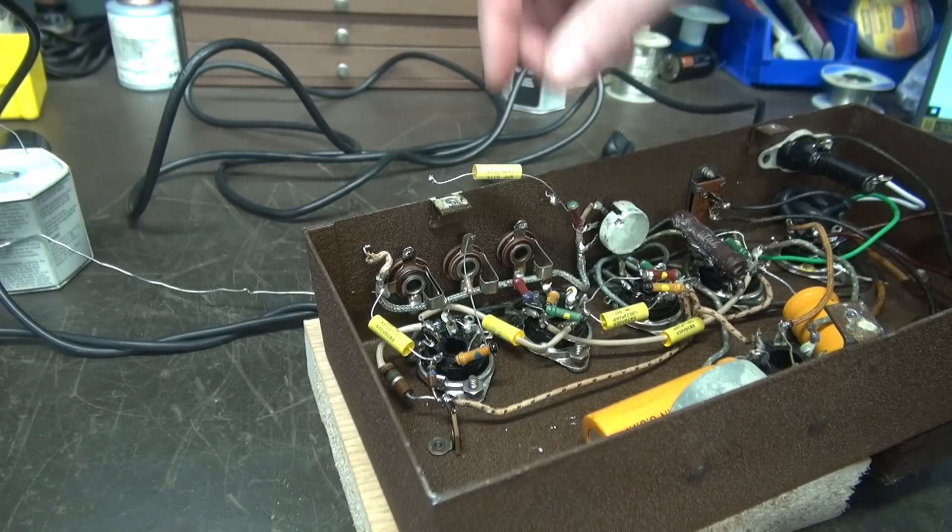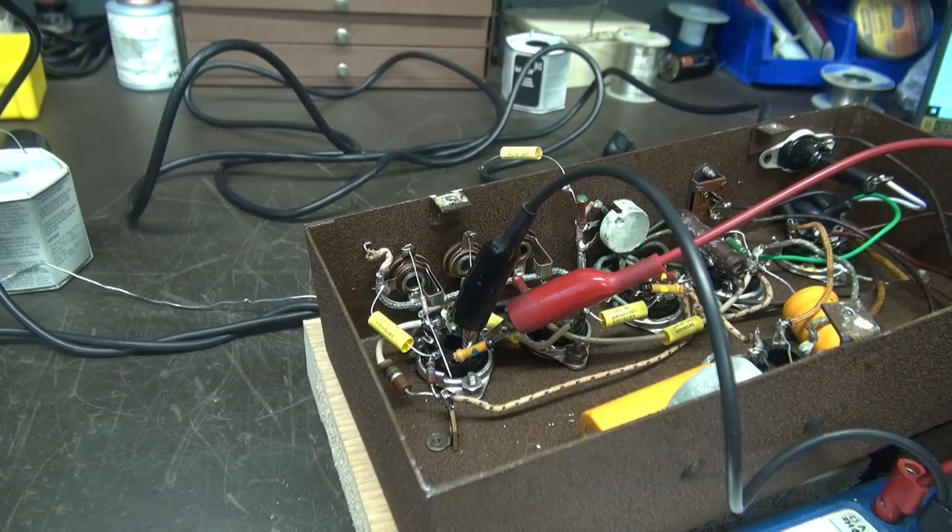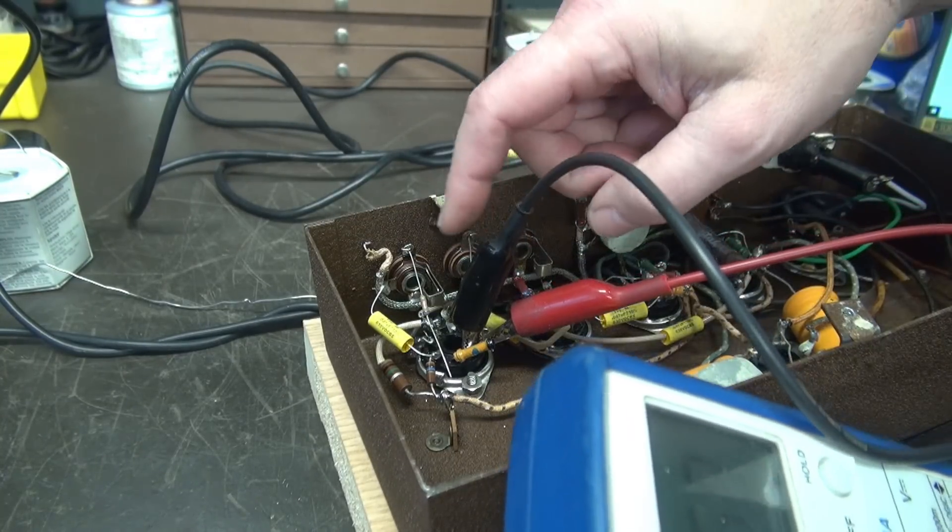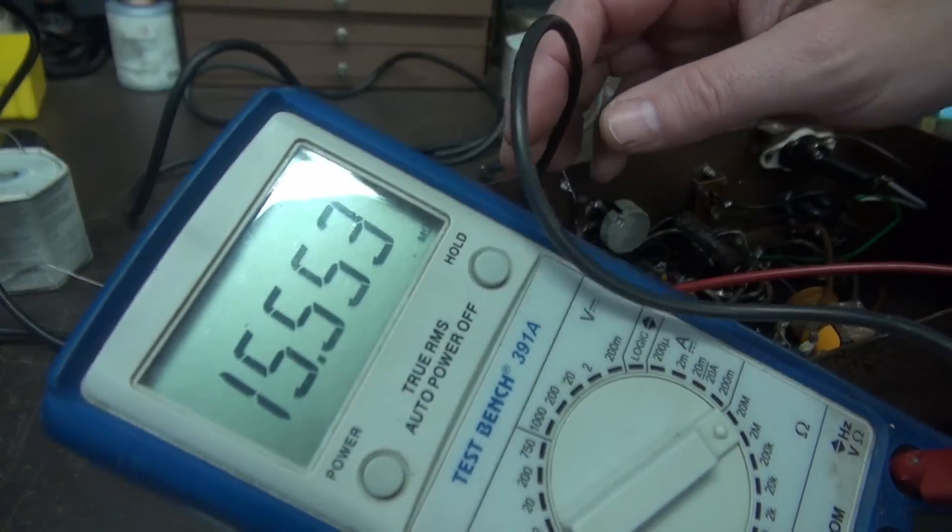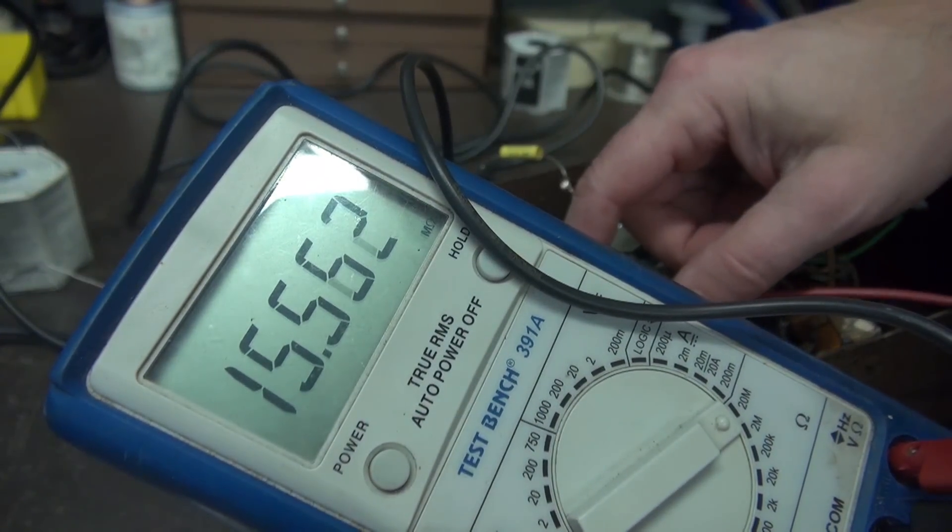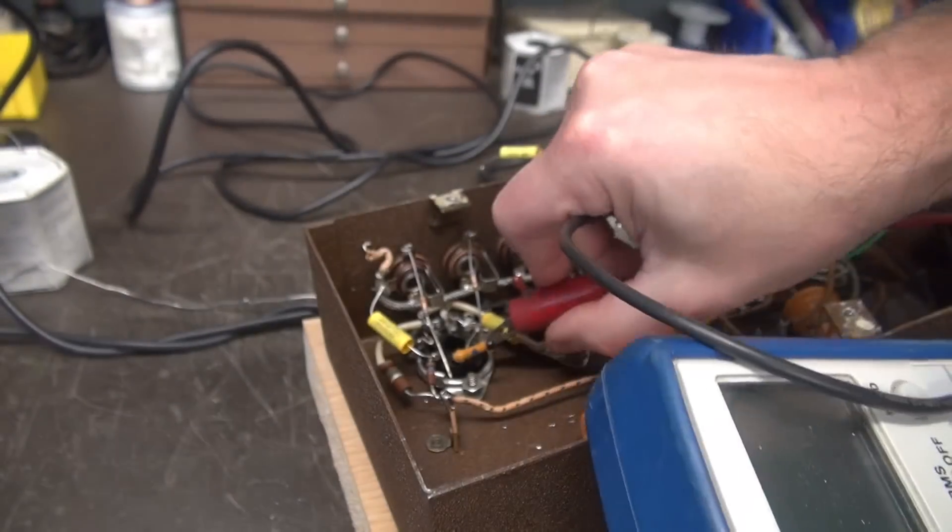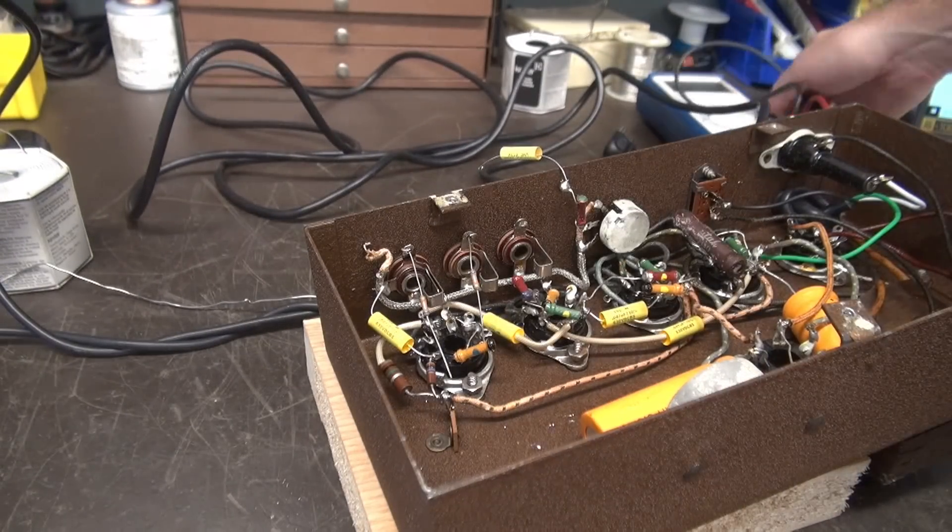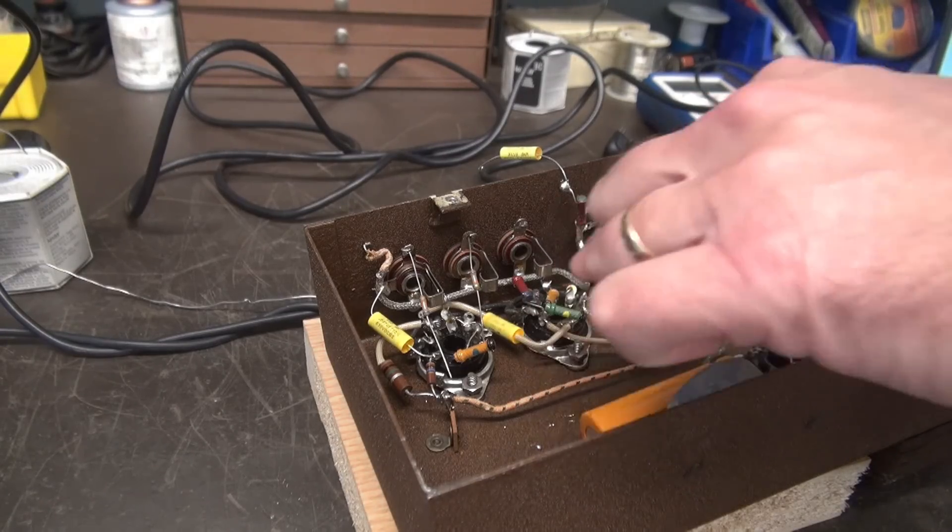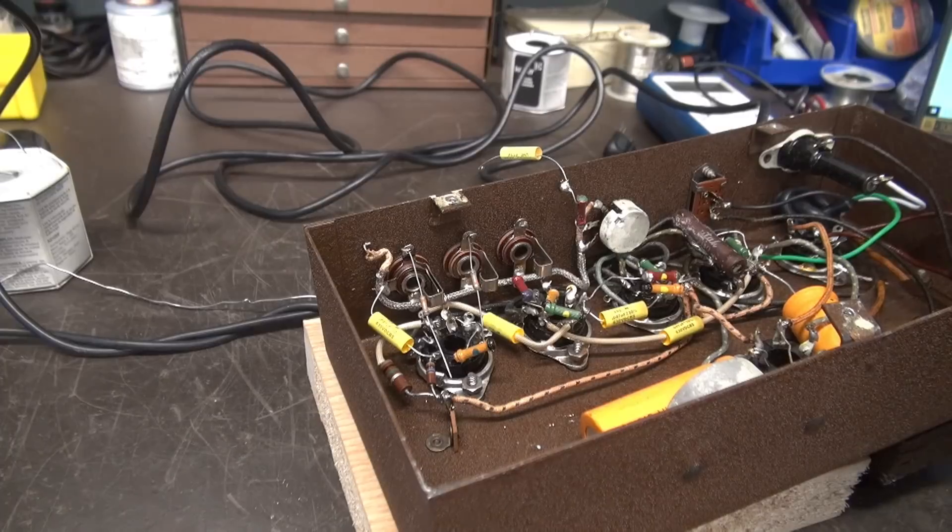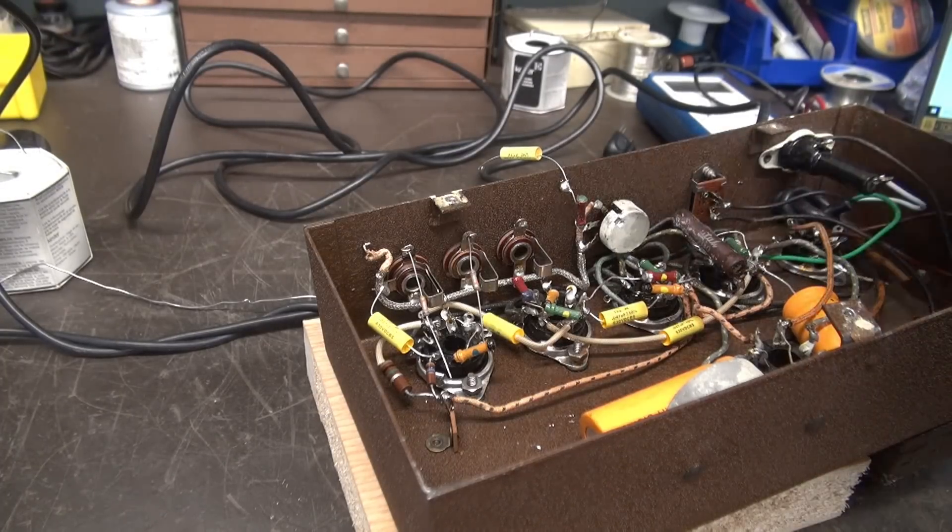So there is one other change that we're going to do on this input. Currently, the resistor going to ground is supposed to be a 10 meg. You can see it's a little over 15. It's way out of tolerance, but it doesn't matter because we're going to be changing that resistor out with a 2 meg. So let me get that out, get these others hooked up.